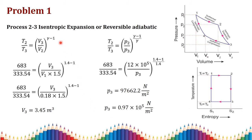For process 2 to 3, isentropic expansion, the PVT relation gives: t2/t3 = (p2/p3)^((γ-1)/γ) = (v3/v2)^(γ-1). Equating temperature and volume and substituting v2 = 1.5 × v1 = 0.27 m³, we find v3 = 3.45 cubic meters.